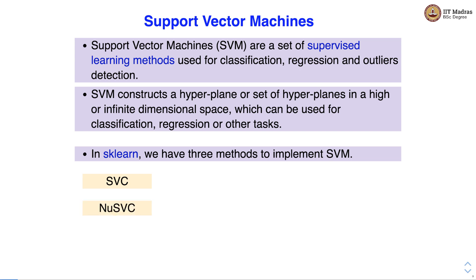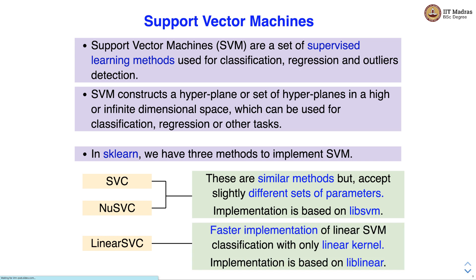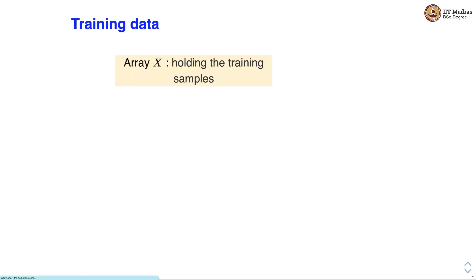The three methods are: SVC, NuSVC, and LinearSVC. The first two methods are similar but accept slightly different sets of parameters, and are implemented based on the libSVM library. LinearSVC, on the other hand, is a faster implementation of linear SVM — it uses only a linear kernel and is based on the liblinear library.